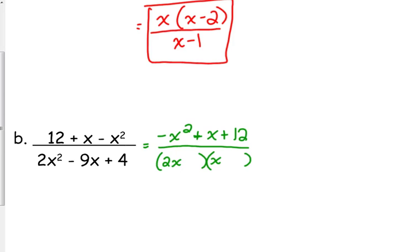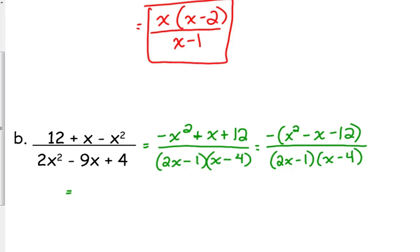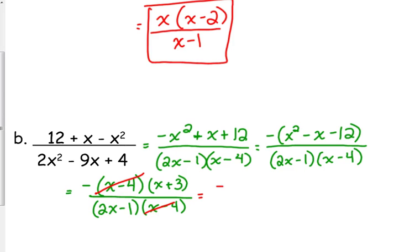It is 2x minus 1 times x minus 4. When I multiply the outside, 2 times 4, that gives me 8. The inside gives me 1, 8 and 1 is what's going to give me 9. So, the numerator, I need to start by factoring out a negative. We don't factor with a negative leading coefficient. So, when we take out a negative, it changes all of our signs. Then, I can factor into x minus 4 times x plus 3.